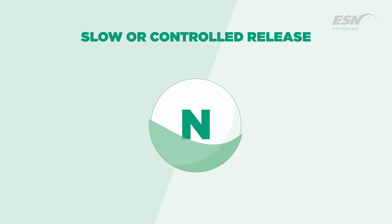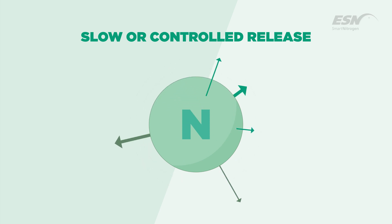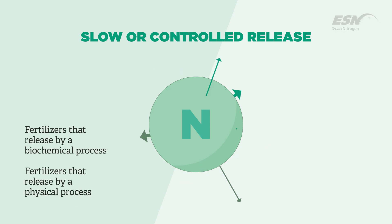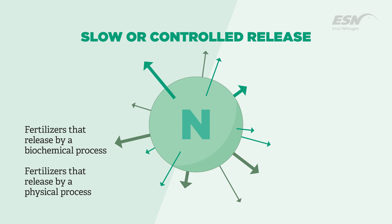The slow and control release fertilizers work by slowing the rate of nitrogen release into the soil. We're not altering the chemistry of that nitrogen, but we're reducing the exposure — reducing the amount of nitrogen that's exposed at any point in time. But they may also differ in the time that they're effective and how we would use them.